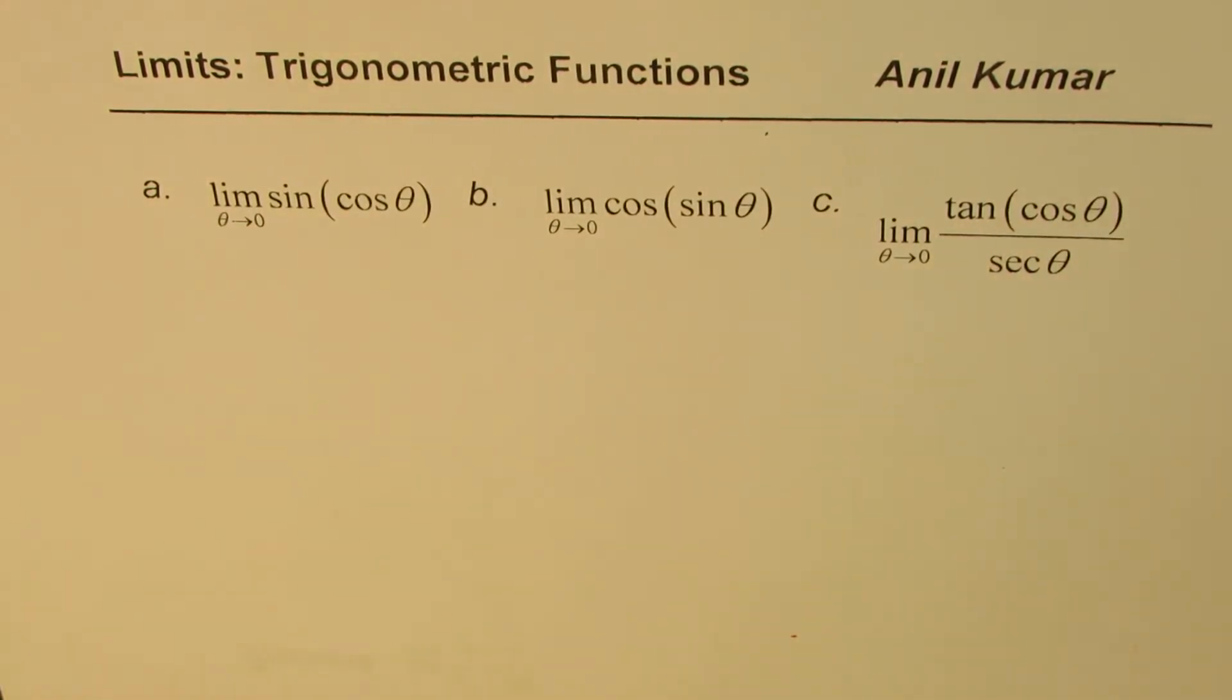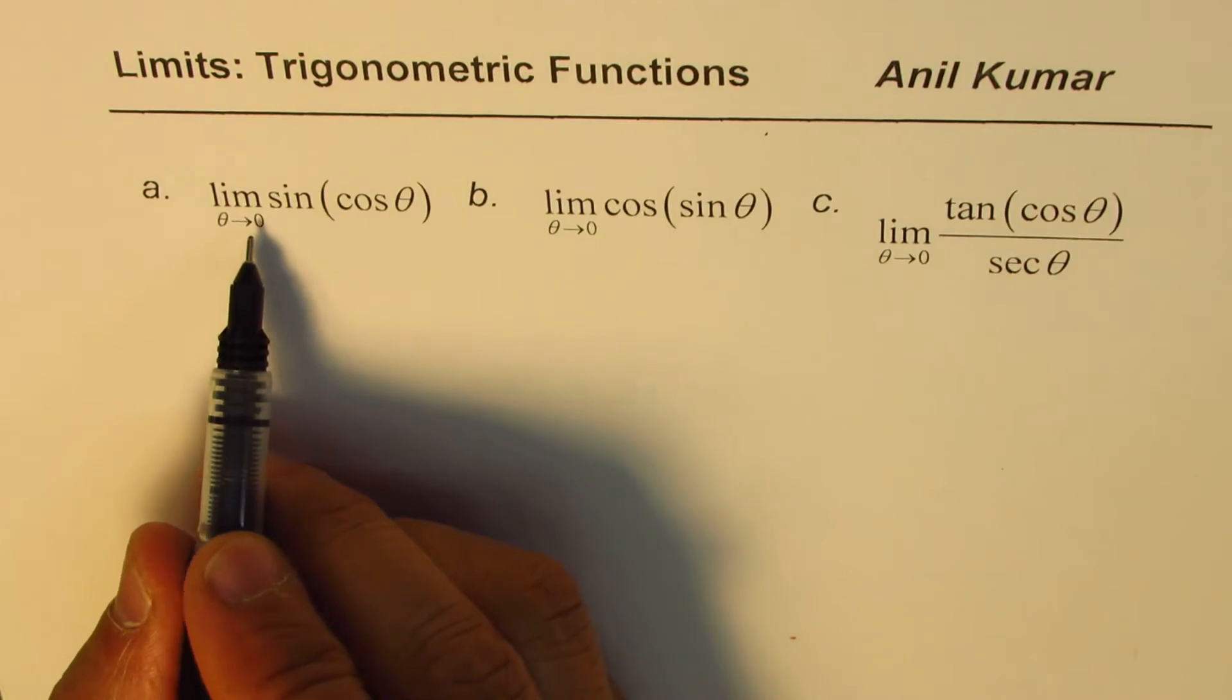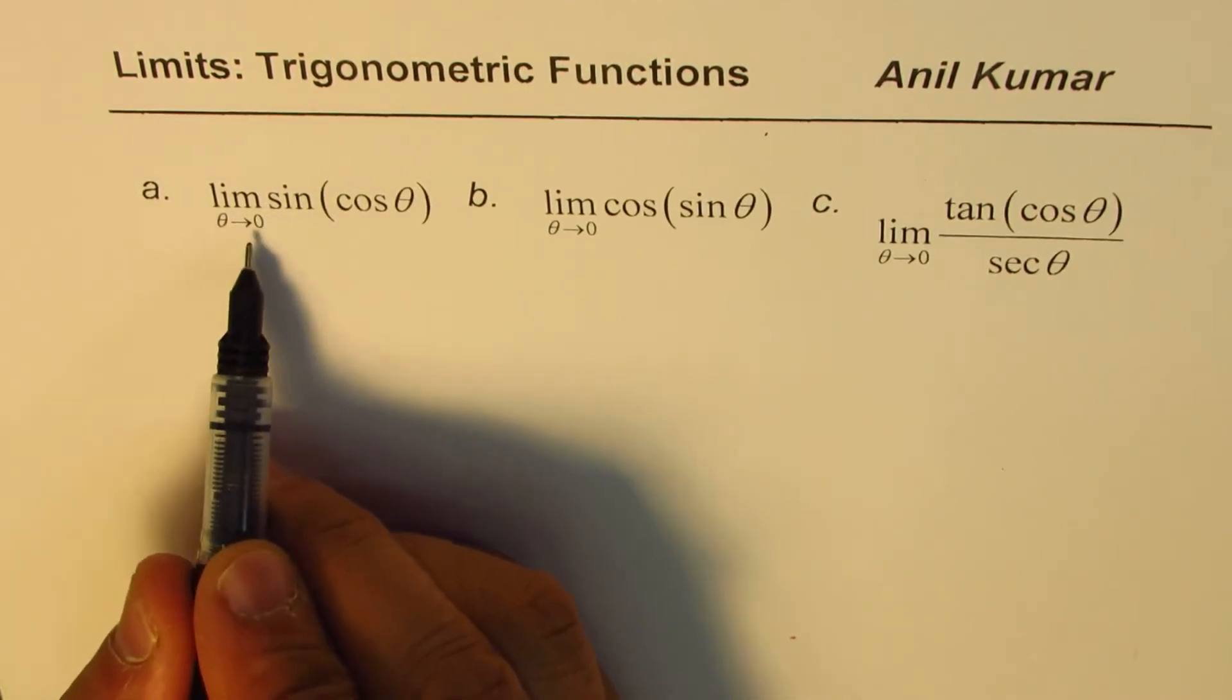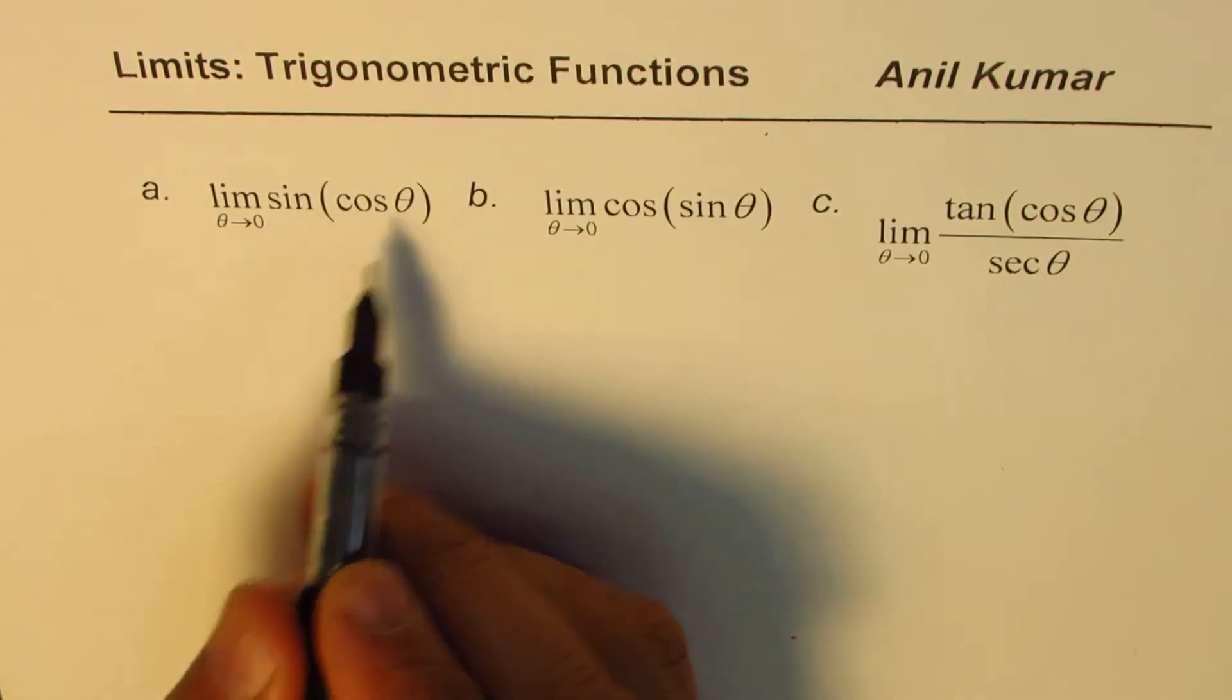You can pause the video, answer the question and then look into my suggestions. So let us begin with the very first one which is limit when theta approaches 0 for sine of cos theta.